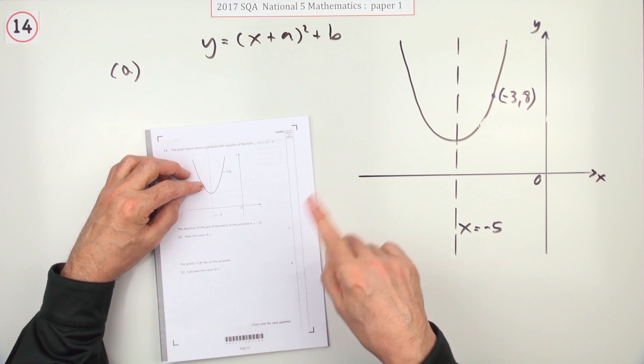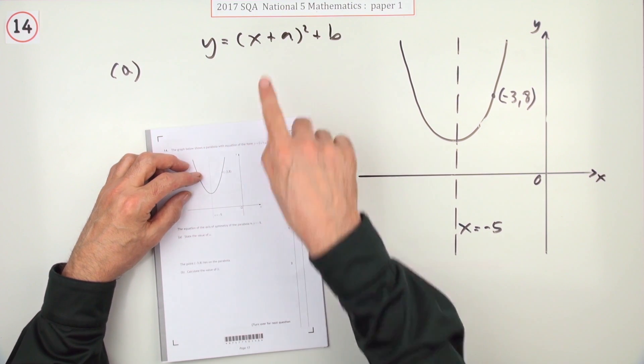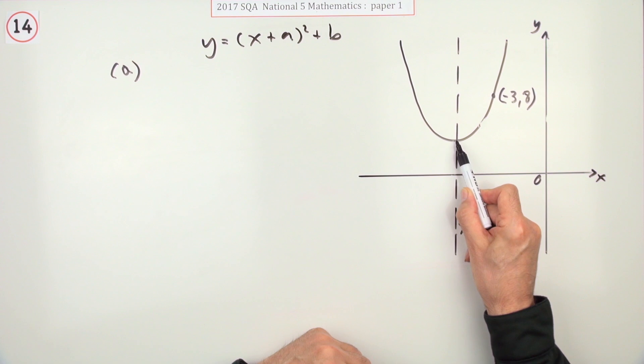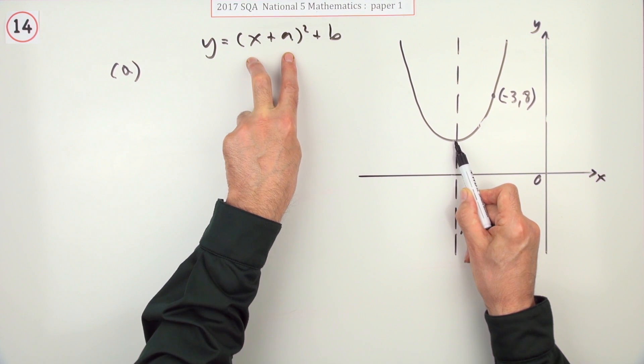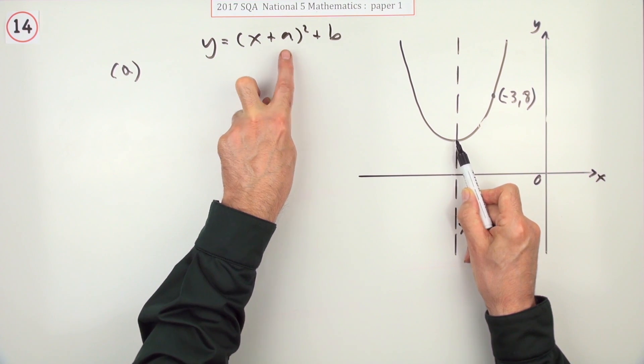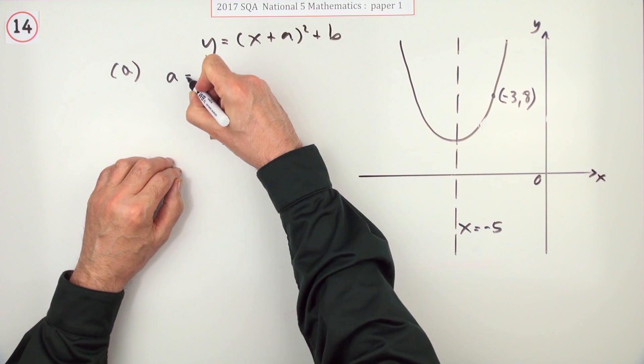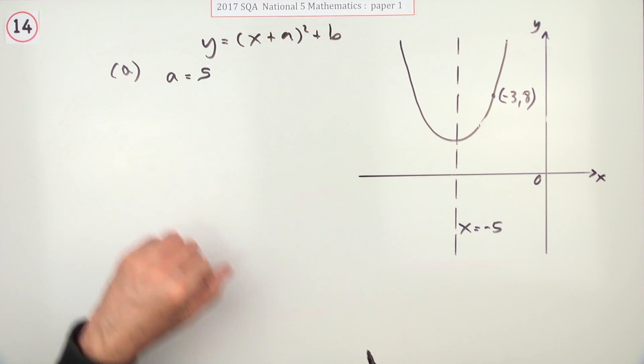But for one mark, there's only three marks altogether, state the value of a. So that's the point negative 5 something. And in this it should be what's being subtracted from that. And if you're subtracting a negative 5, it would be a plus 5 that would go in. So the answer to that part is a equals 5.